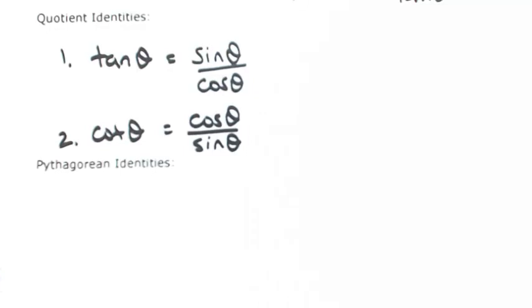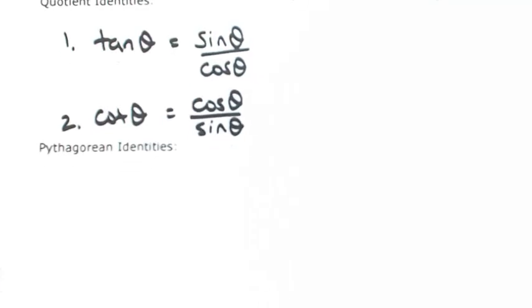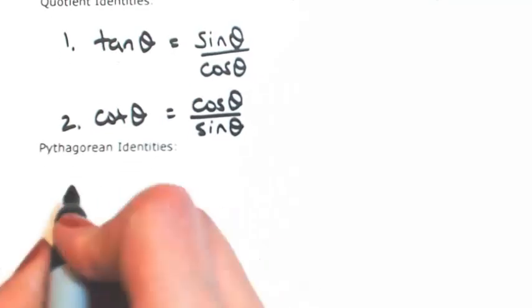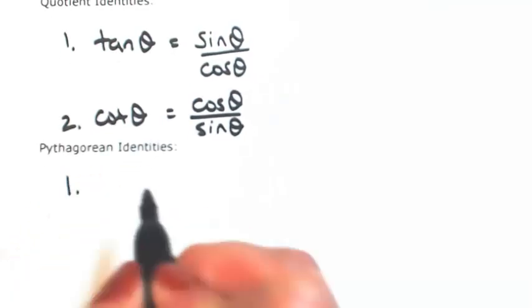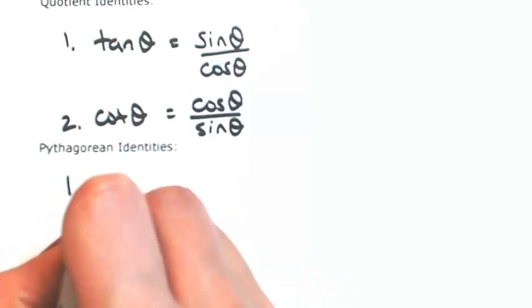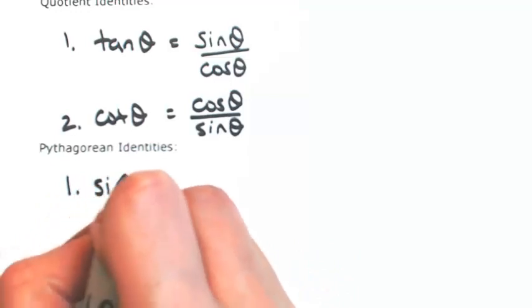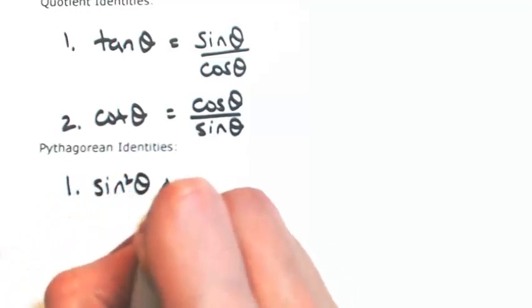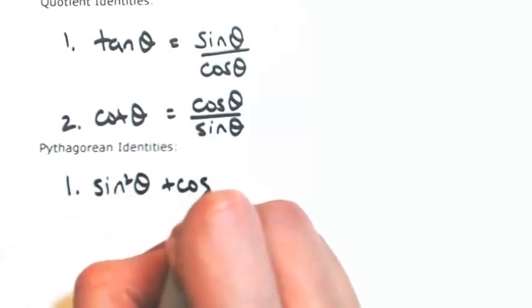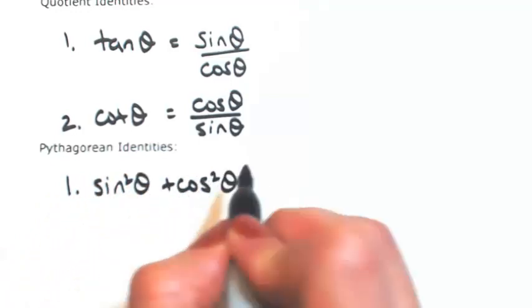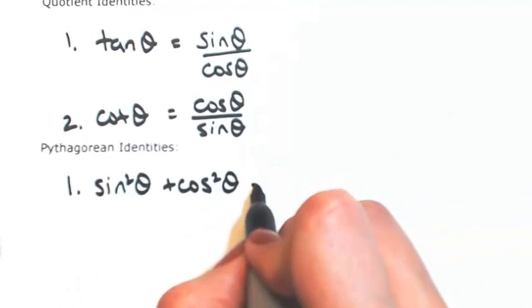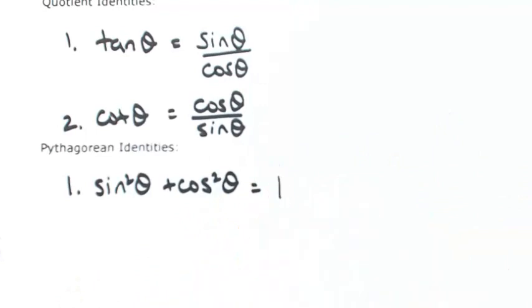The next identities are the Pythagorean identities, and there are three of them. The first one is that sine squared plus cosine squared of the angle equals one.